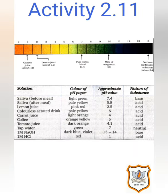Activity 2.11: Test the pH values of solutions given in table 2.2 and record your observations — what is the nature of each substance? Saliva before a meal: the color of the pH paper will be light green and the approximate pH value will be 7.4. It is a base as it is above 7. Saliva after food: the color of the pH paper will be pale yellow and the pH value will be 5.8. It is acidic because it is less than 7.